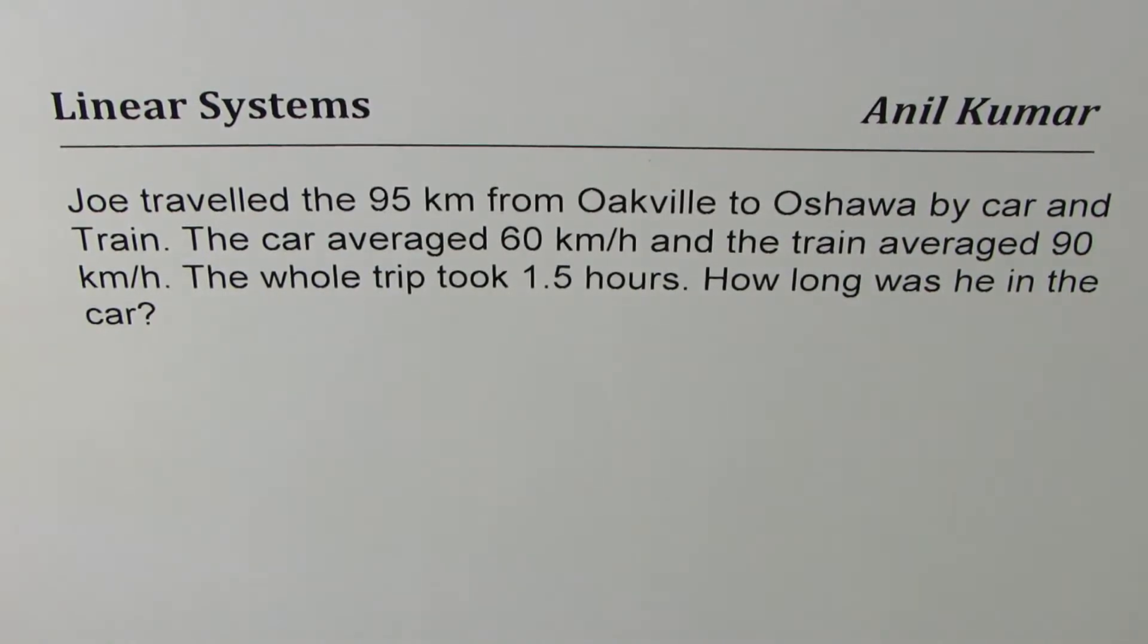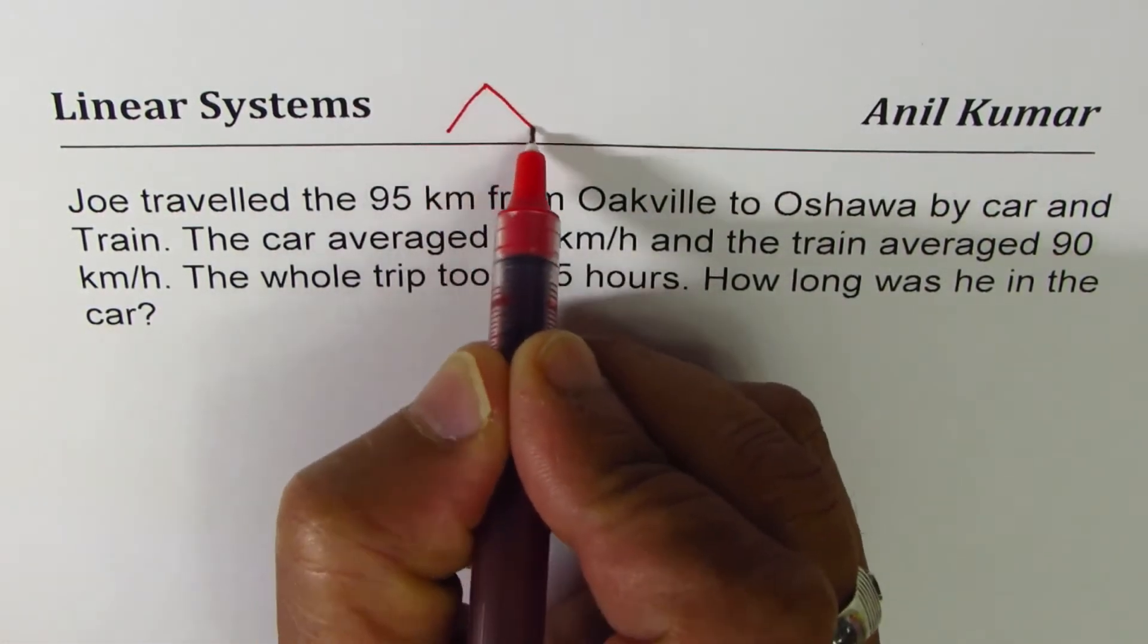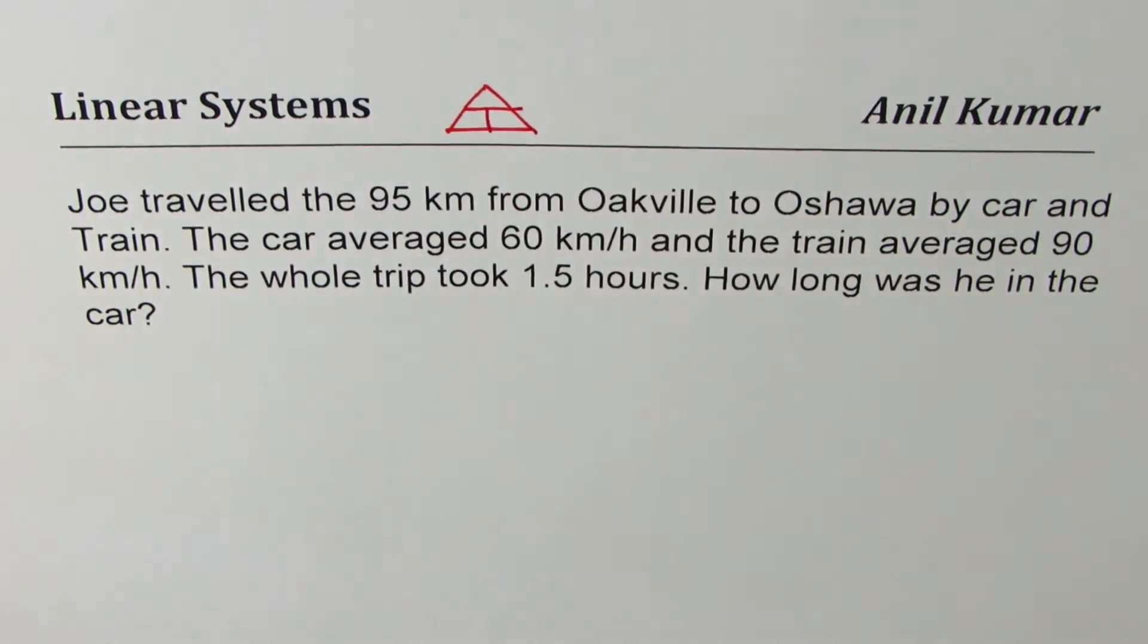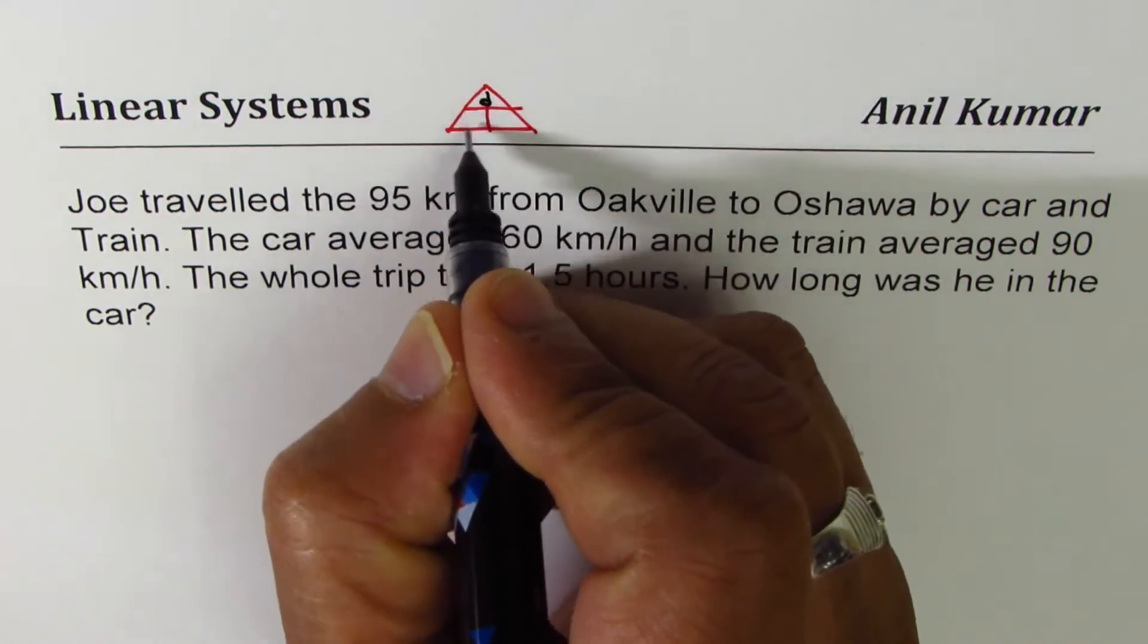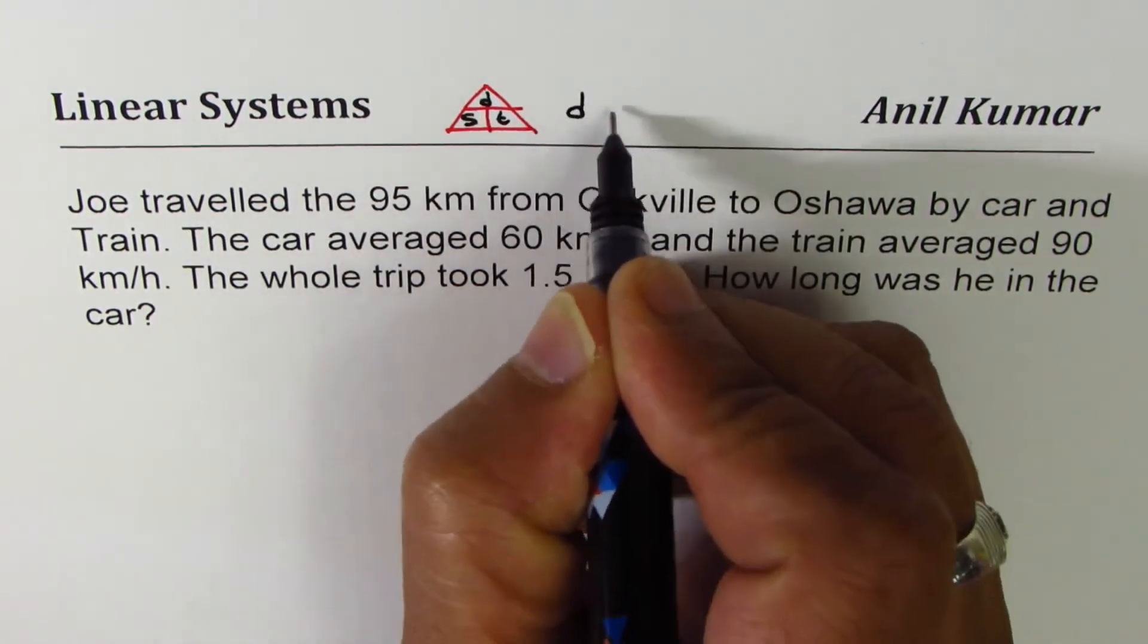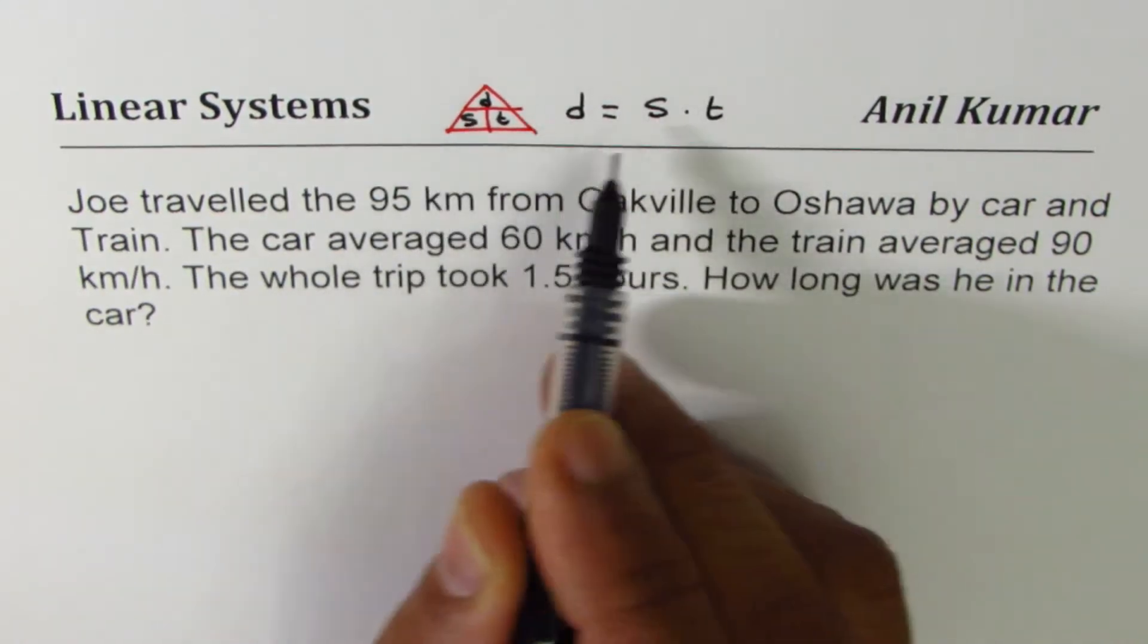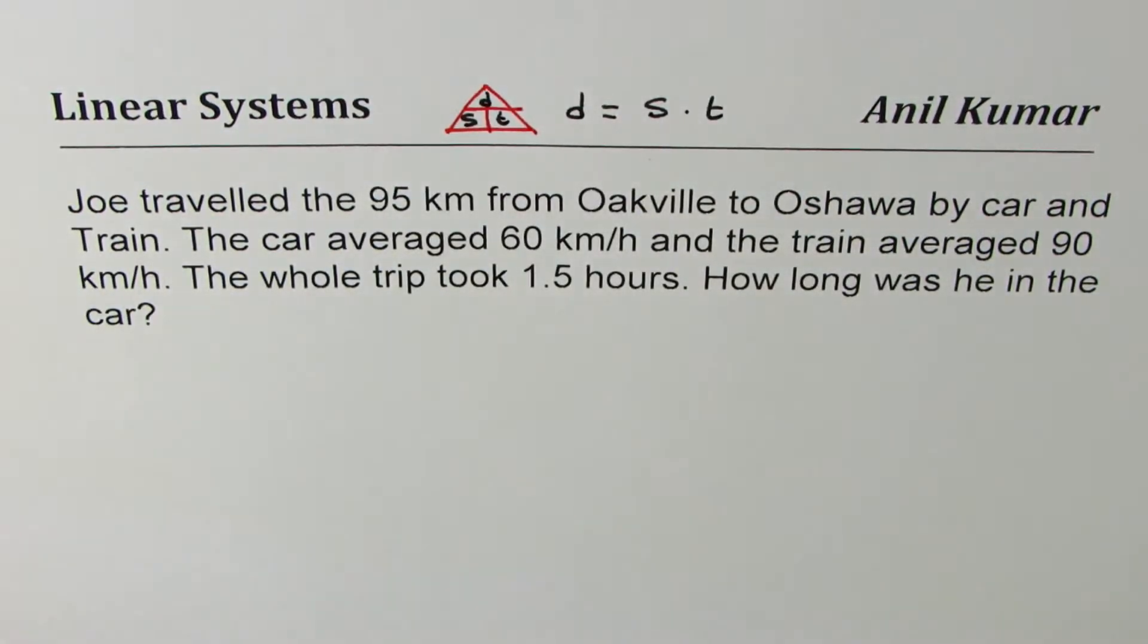Distance, speed and time problems. I like to use the relation which we could show in a triangle here. We know distance is speed into time. So we can say distance, speed and time. From here, distance is speed into time. So distance is product of speed and time.